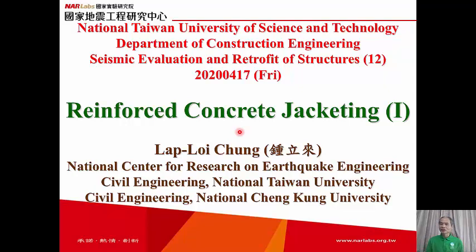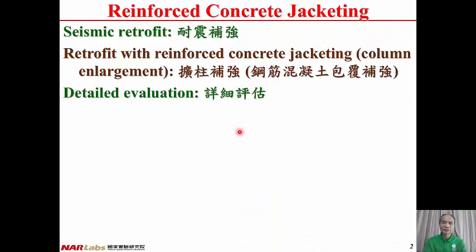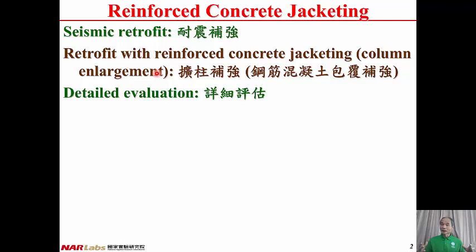With the application of Reinforced Concrete Jacketing, the column becomes stronger. We will shift the failure mode of the original structure to a better failure mode in order to avoid weak or soft stories. Seismic Retrofit is a method to upgrade the seismic performance of a structure. Column Enlargement — putting Reinforced Concrete on the columns — is used to upgrade the seismic performance. After retrofit, we conduct detailed evaluation to ensure the degree of seismic performance upgrading is sufficient.